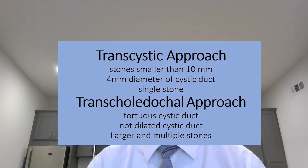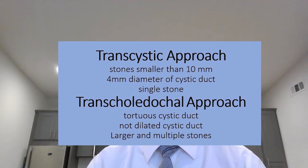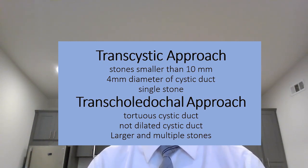For a transcystic approach, the stone has to be small — less than 10 mm — and you have to have a good size cystic duct, for example more than 4 mm in diameter. If the cystic duct is small, or there are multiple stones, or they are larger and the cystic duct is tortuous, then you have to use a transcholedochal approach.